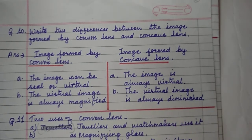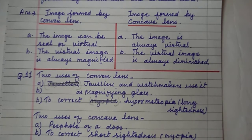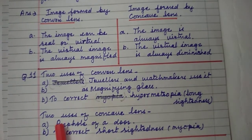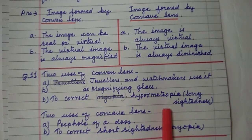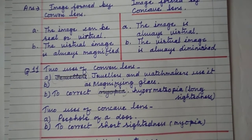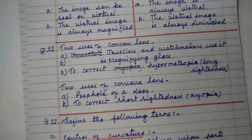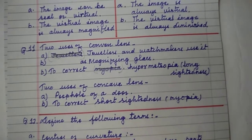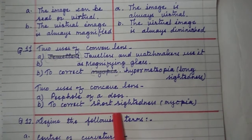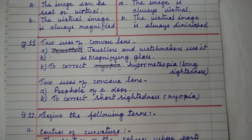Two uses of convex lens: jewelers and watchmakers use it as a magnifying glass; and it is used to correct hypermetropia or long-sightedness. Uses of concave lens: it is used in the peephole of a door to look outside; and it is used to correct short-sightedness or myopia.